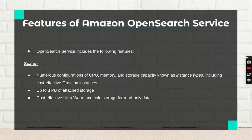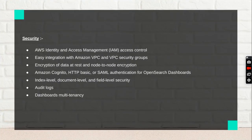Features of Amazon OpenSearch service include the ability to scale across numerous configurations of CPU, memory, and storage capacity — known as instance types — including cost-effective Graviton instances, and up to 3 PB of added storage. For security, you can use AWS IAM roles to assign limited access to particular resources.